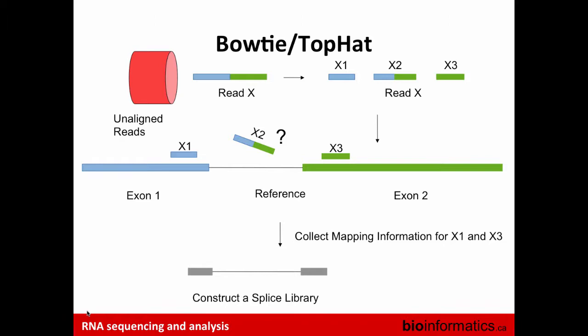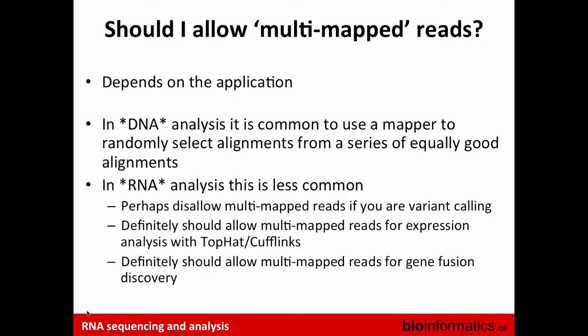After breaking the read, the first chunk aligns to exon 1 and the third chunk aligns to exon 2. The middle chunk still has issues, but it collects mapping information from chunks X1, X2, and X3 to build a splice junction library of potential splice sites. Once it has that library, it goes through the alignments again based on the splice junction library and re-aligns all reads around those detected sites to confirm them, then annotates each read according to the detected splice junctions.